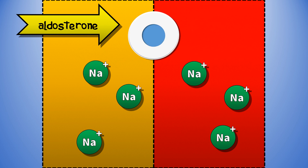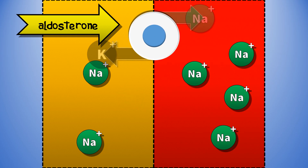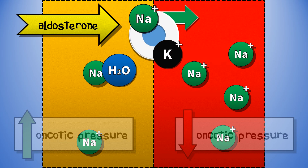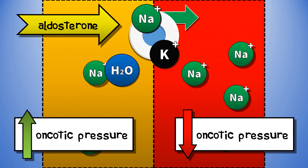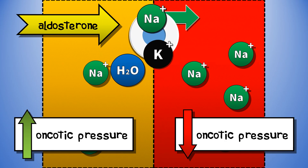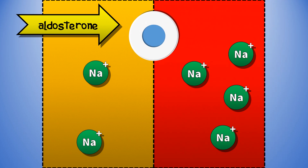Aldosterone acts on the sodium-potassium cotransporter in the distal convoluted tubule. This cotransporter reabsorbs sodium back into the bloodstream from the urine and secretes potassium into the tubule. In doing so, it raises the concentration of solute in the blood compared to the urine, creating a concentration gradient that pulls water back into the blood via osmosis. Put simply, water follows sodium — so aldosterone increases both blood sodium and blood volume. For today's video we can pretty much just ignore potassium. Sorry, potassium.